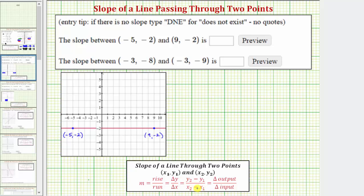Before we use this formula to find the slope, let's look at the graph of the line passing through these first two points. The point negative five comma negative two is this point here, and the point nine comma negative two is this point here. Notice how the line passing through these two points is a horizontal line, and a horizontal line always has a slope of zero.